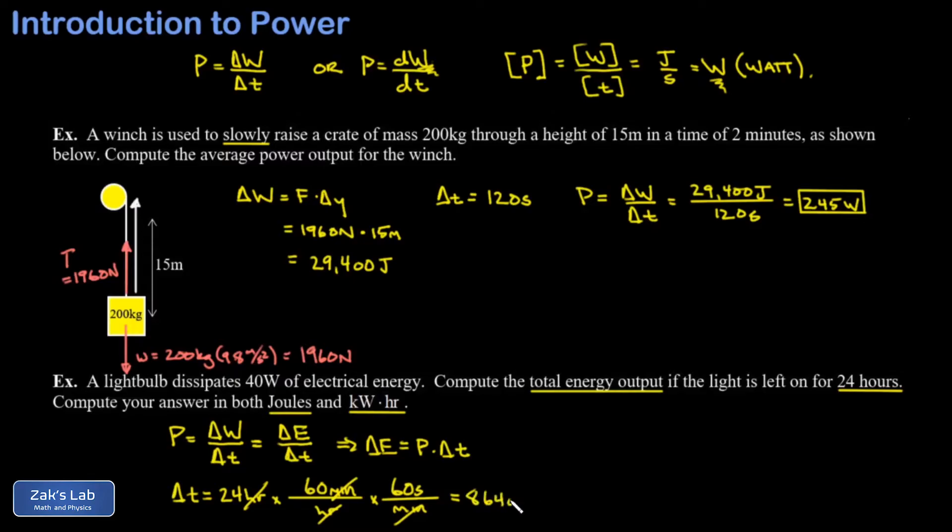Now I can wrap things up by taking the power, which was 40 watts or 40 joules per second, times 86,400 seconds, and this gives me 3,456,000 joules.